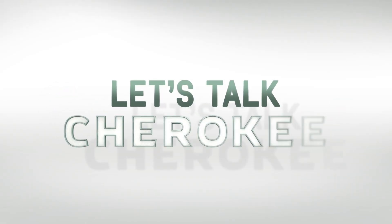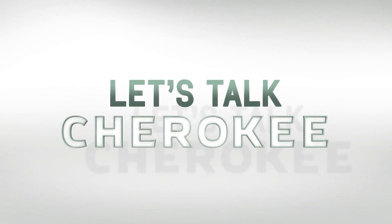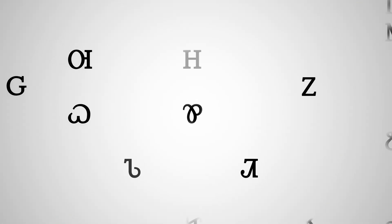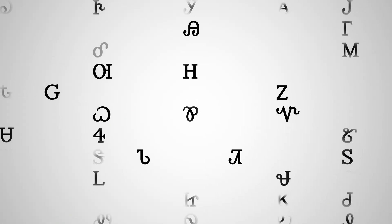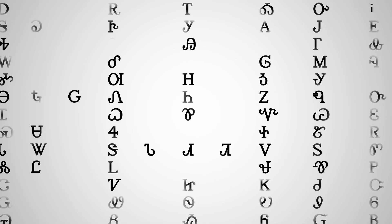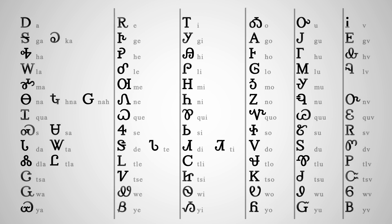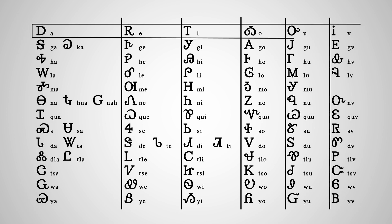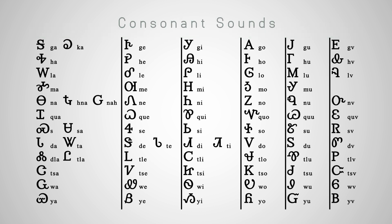Let's talk Cherokee. The Cherokee syllabary is the writing system invented by Sequoia. Each character represents a syllable in the Cherokee language. In this syllabary chart, the top row contains the six vowel sounds, and the subsequent rows include the consonant sounds.